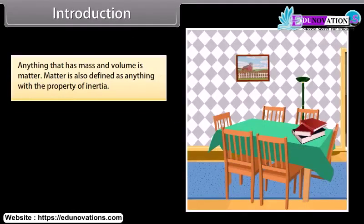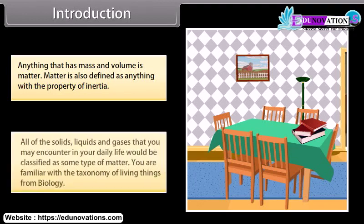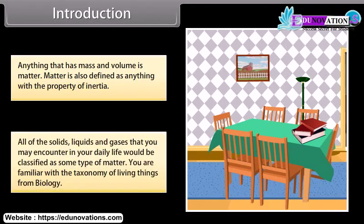Anything that has mass and volume is matter. Matter is also defined as anything with the property of inertia. All of the solids, liquids and gases that you may encounter in your daily life would be classified as some type of matter. You are familiar with the taxonomy of living things from biology.